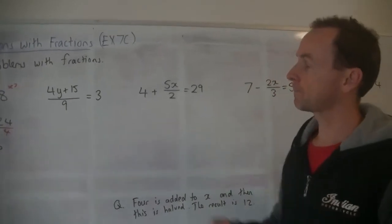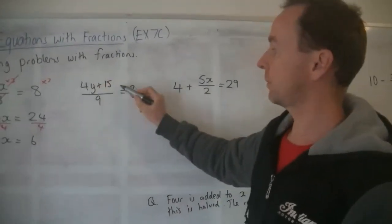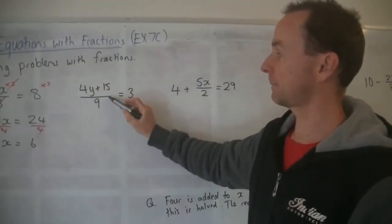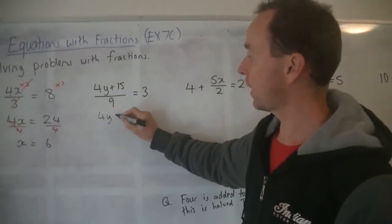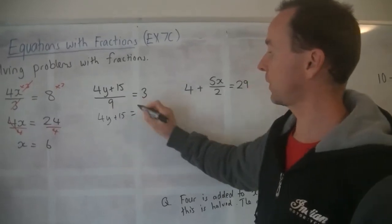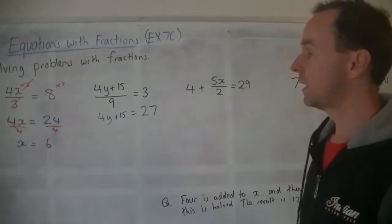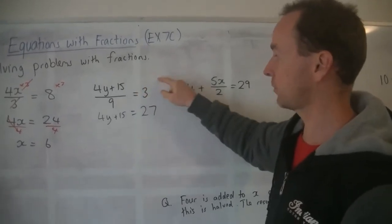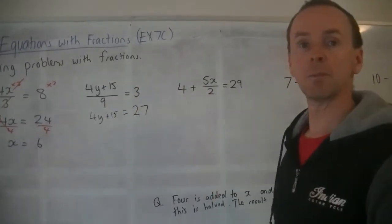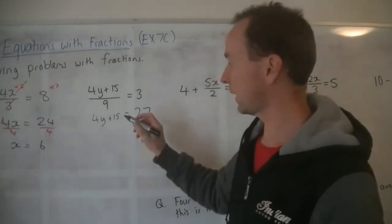Alright, next one. This whole term on the top is divided by 9. So in the first step, we multiply both sides by 9. And we get 4y plus 15 equals 3 times 9 is 27. So I didn't show the workings out this time, but you could have written times 9 times 9, cancel the 9s. But hopefully you can understand what I'm doing without doing that.